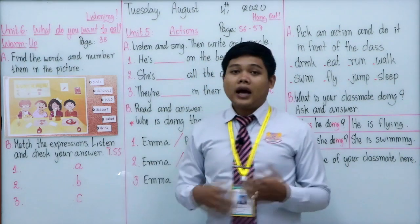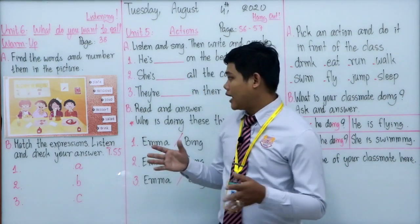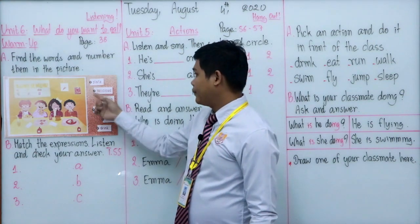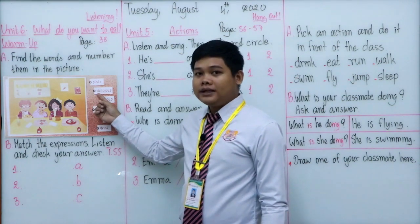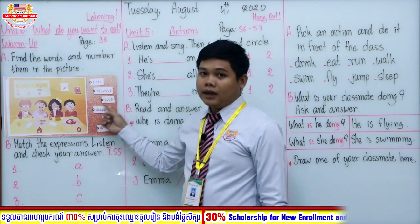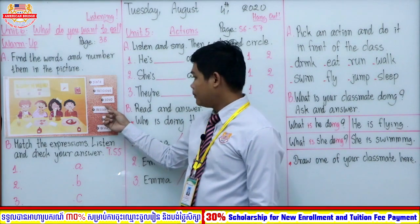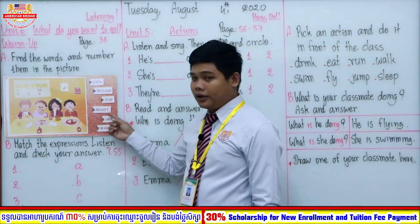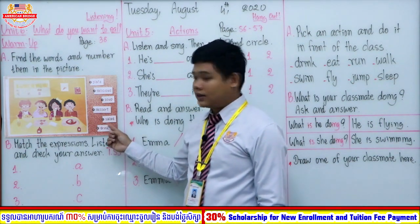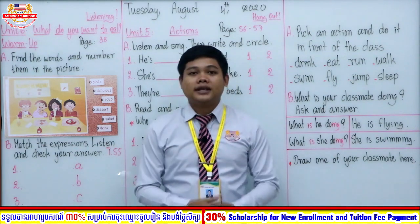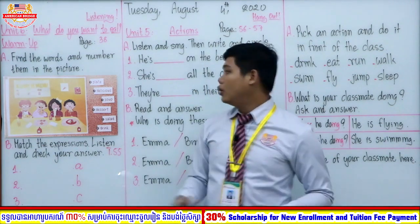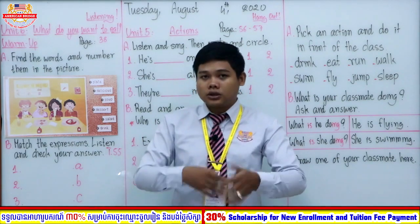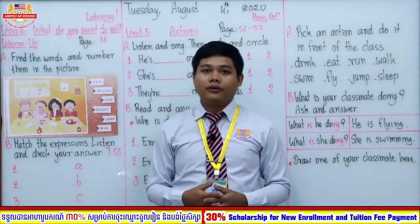Now we have finished our six new vocabulary words. Let's read them together with the teacher: plate, delicious, soup, dessert, salad, and drink. I hope you can remember these six words because in this unit we will focus a lot on them.